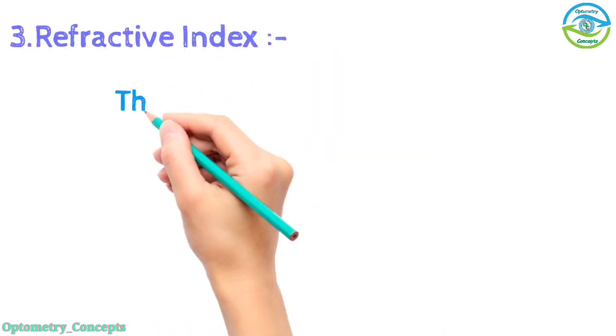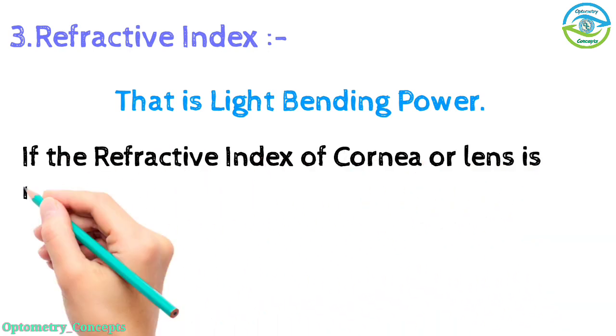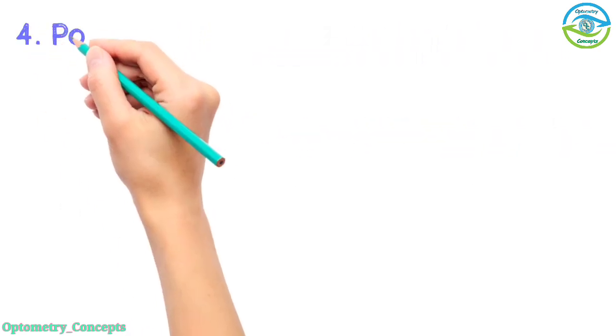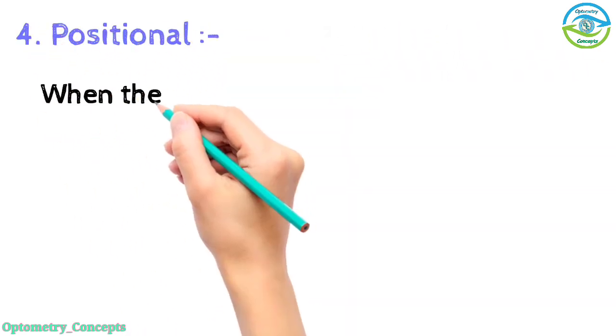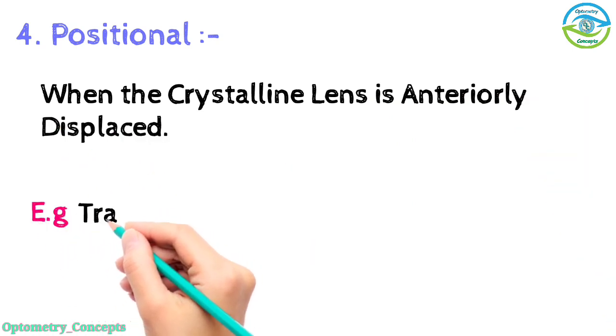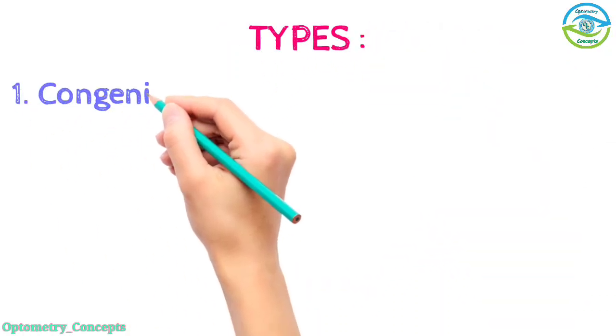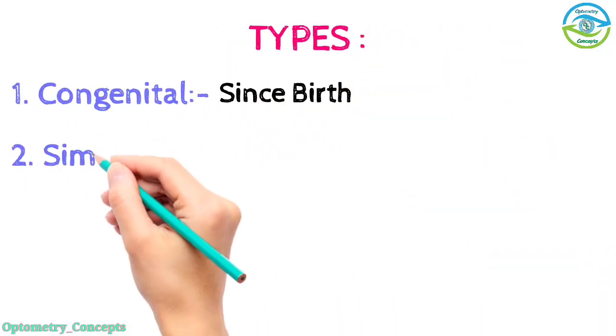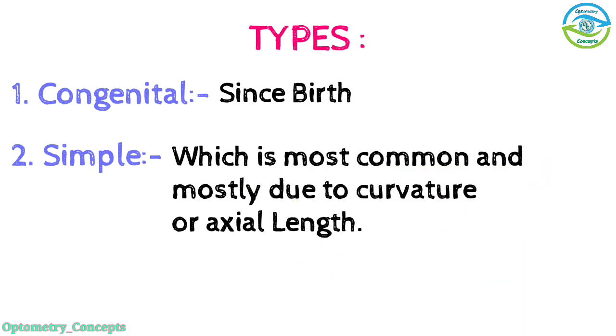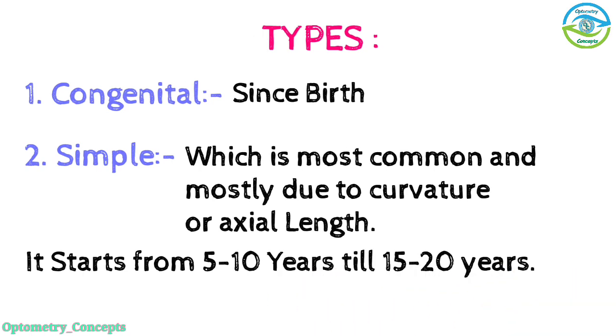Refractive index, that is light bending power - if the refractive index of cornea or lens is increased it can induce myopia. Positional - when the crystalline lens is anteriorly displaced, for example trauma. Congenital - since birth. Simple - which is most common and mostly due to curvature or axial length. It starts from 5 to 10 years till 15 to 20 years.